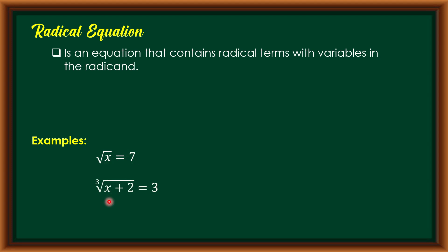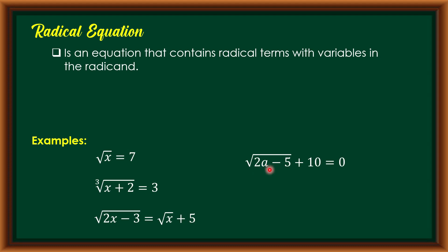Next, we have the cube root of x plus 2 is equal to 3. Again, we have variables in our radical. That's why this is an example of a radical equation. Another example: square root of 2x minus 3 is equal to square root of x plus 5. We also have square root of 2a minus 5 plus 10 is equal to 0. Last example: 4th root of 2b minus 4 is equal to b minus 1. These are all examples of radical equations.